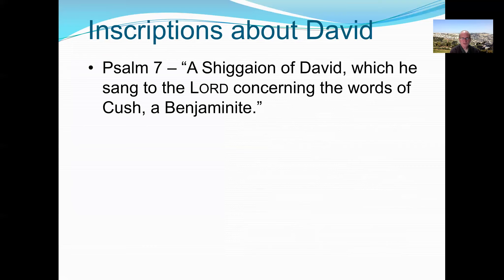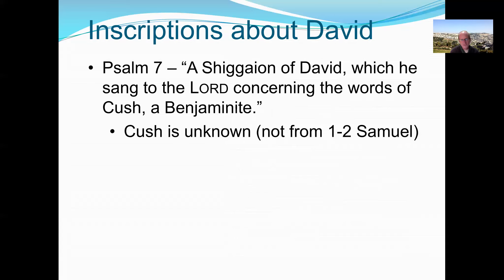Many of David's psalms have inscriptions at the beginning that not only name the author but give context about when or why the psalm was written. For example, Psalm 7 begins: 'A Shiggaion of David, which he sang to the Lord concerning the words of Cush, a Benjaminite.' Cush is not known from First or Second Samuel — which actually supports authenticity, since a later editor simply reading Samuel wouldn't have inserted an unknown name.